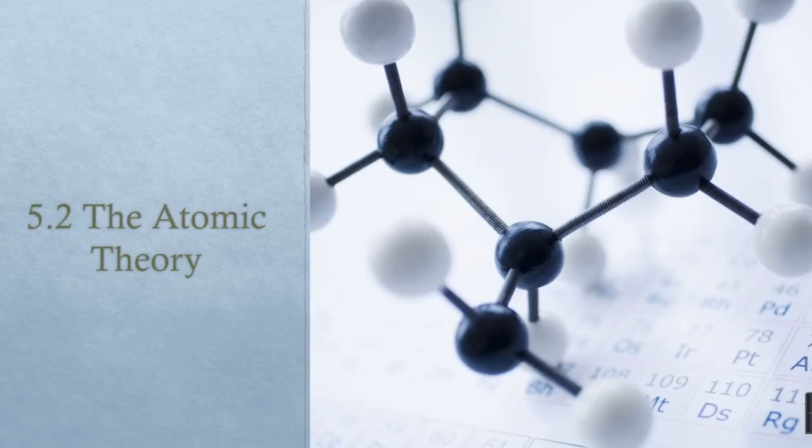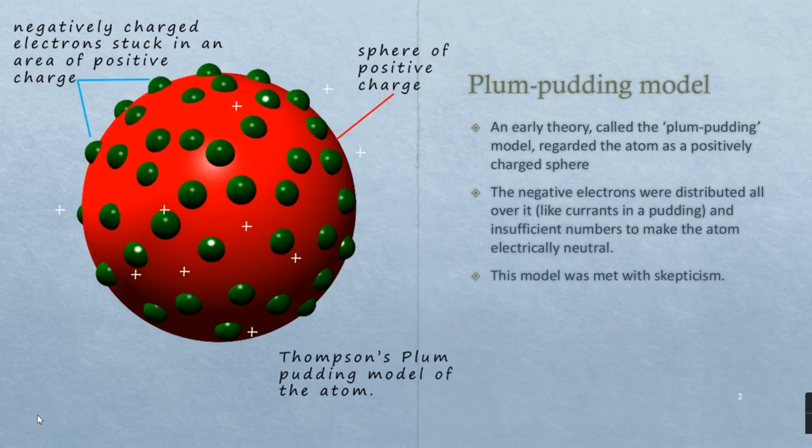This video discusses atomic theory and the development of different atomic models throughout the history of atomic physics. The first model we will talk about is the Plum-Pudding model.